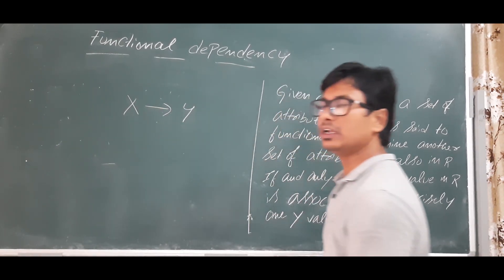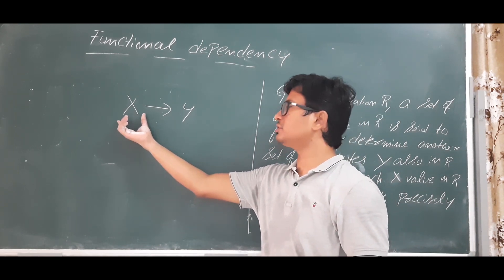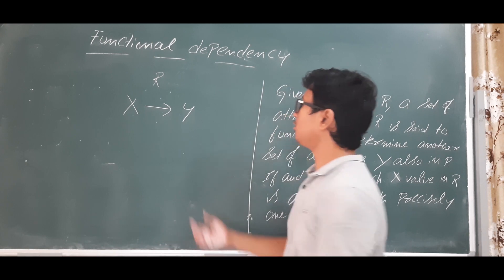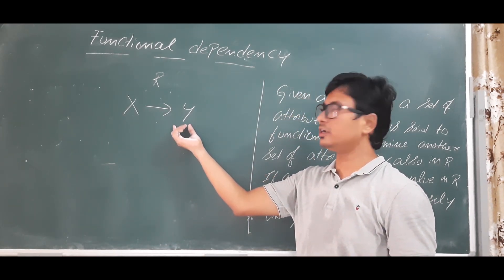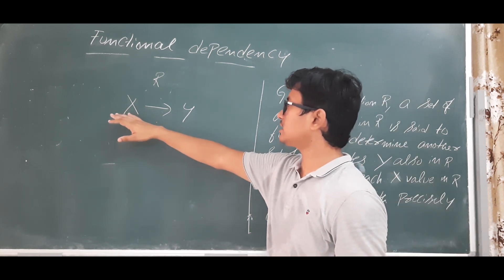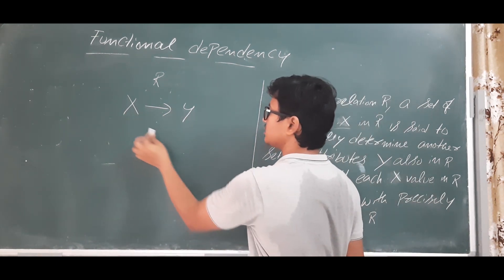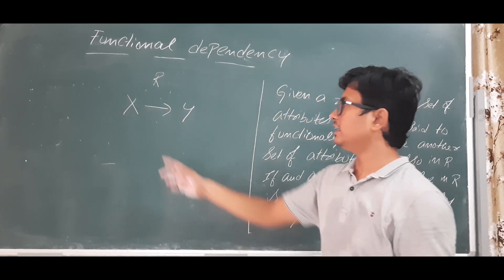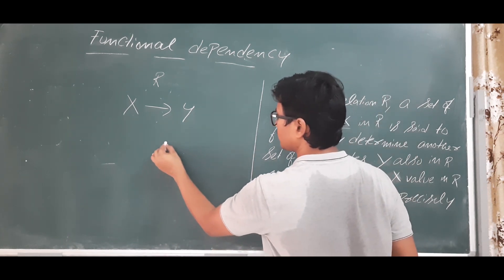We can mathematically represent it as X determines Y. X can be a set of attributes or a single attribute from relation R, and Y can also be a single attribute or a set of attributes. We write this as: X functionally determines Y. For a single value of X, we can say that X functionally determines Y.